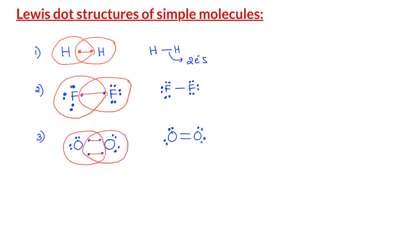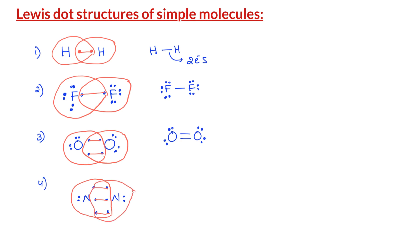Let us do one more example: the N₂ molecule. Each nitrogen belongs to group 5A and has five electrons in the valence shell — three single electrons and one lone pair on each nitrogen. Each nitrogen is short of three electrons for octet configuration. So they donate three electrons each, and these three pairs of electrons are shared by both nitrogens. Now each nitrogen has octet configuration. The Lewis dot structure of nitrogen looks like N≡N.